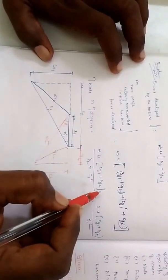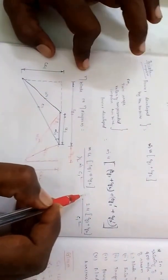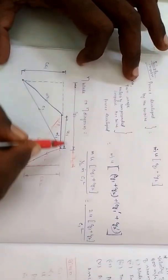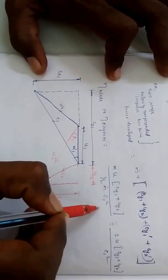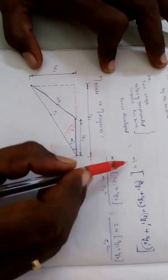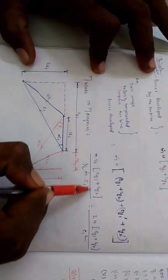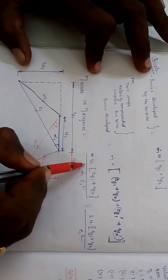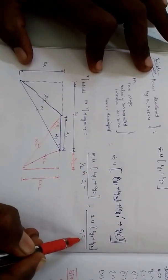Normally they will be asking you to determine the power developed by the turbine and the blade efficiency of the turbine. This blade efficiency is also called diagram efficiency, which is the output power from the turbine divided by the input energy of the fluid entering the turbine. The output power developed is MU(Cy1 + Cy2) for a simple impulse turbine, and the input energy is the kinetic energy of the jet of steam striking the blades, which is half mC1 squared. Simplified, diagram efficiency equals 2U(Cy1 + Cy2) divided by C1 squared.